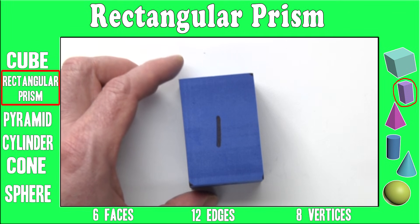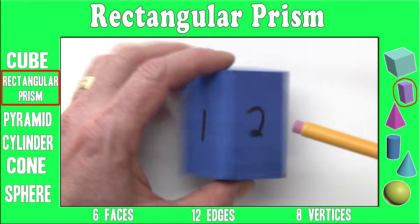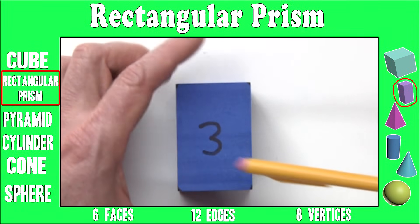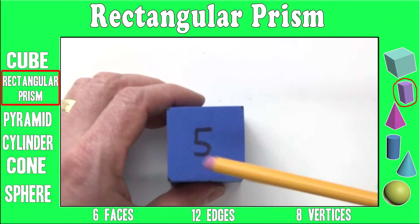A rectangular prism has six faces. One, two, three, four, five, and six.